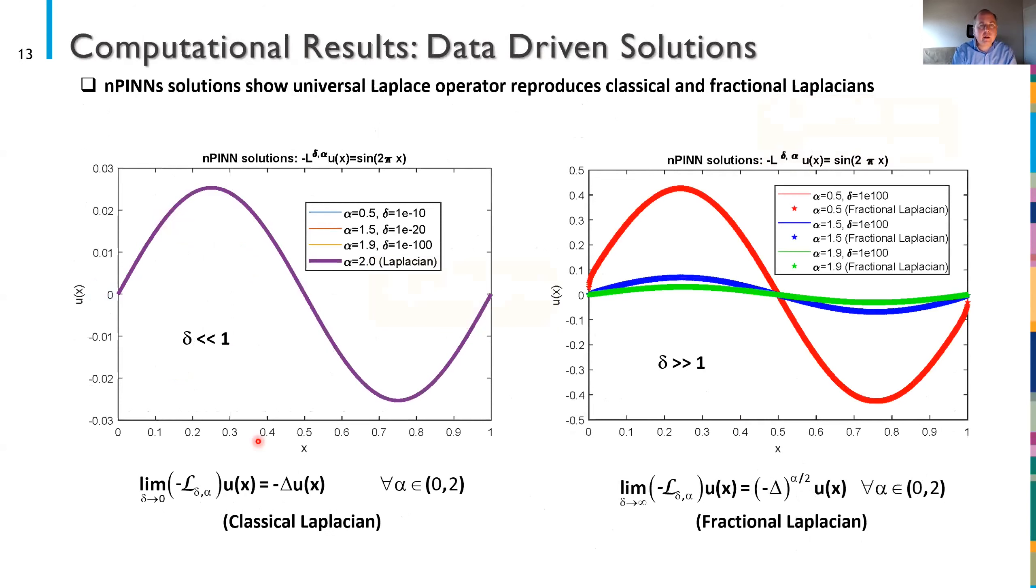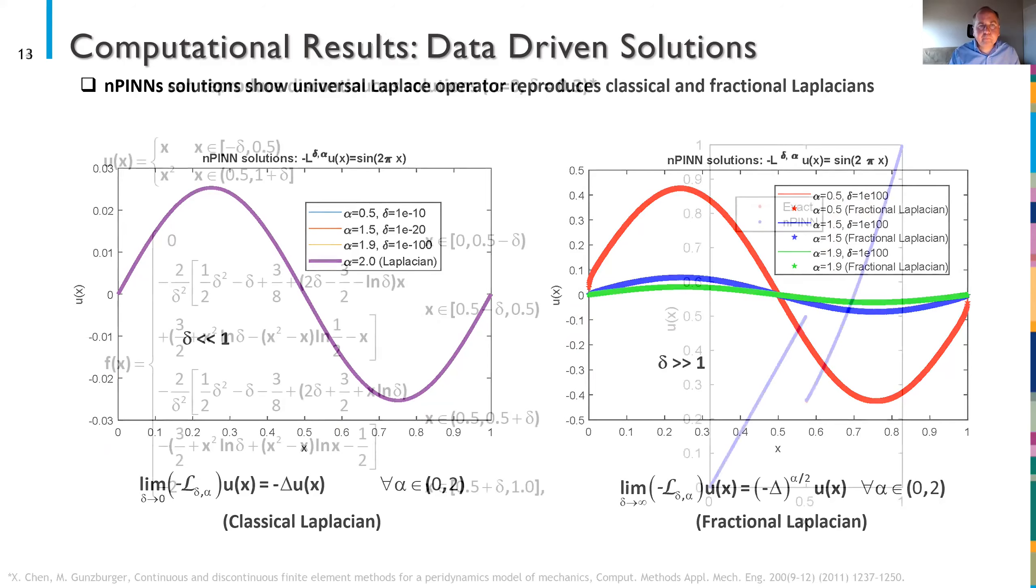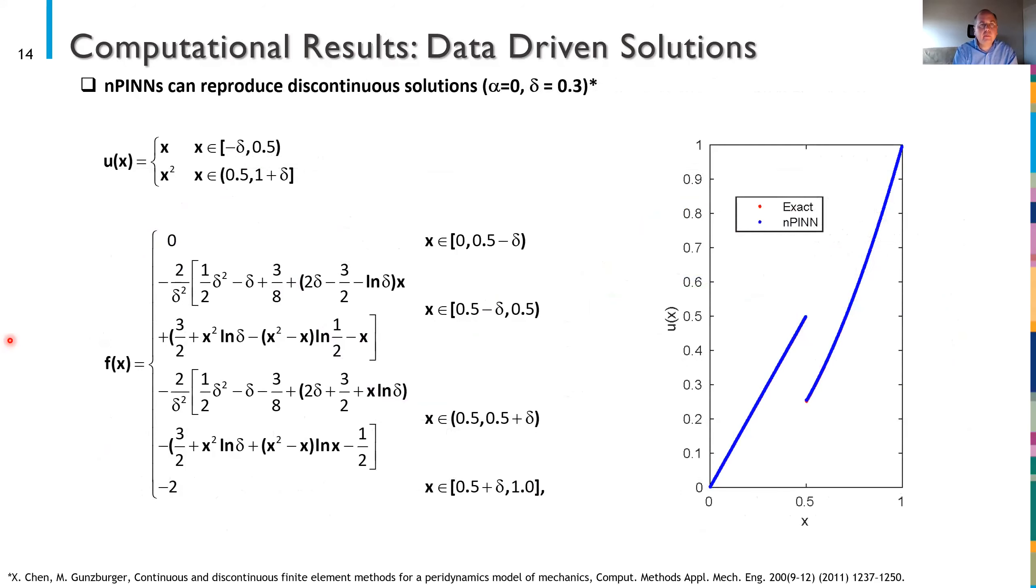So let's kick the tires. If we train this nPINN on data generated from very small values of δ and different choices of α we'll find that it tends to in the eyeball norm reproduce in this case a classical Laplacian. And so it reproduces the desired behavior from the operator. Likewise if we pick a very large value of δ and this is meant to be towards the fractional limit we'll see that as I change the power of α the PINN is able to reproduce the desired solution at least here again in the eyeball norm. So it is exercising the power of this kind of generalized operator. One of the other things we're interested in doing with functions of this type is reproducing discontinuous solutions.